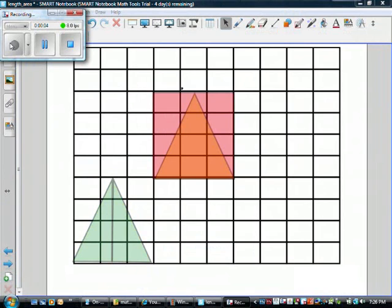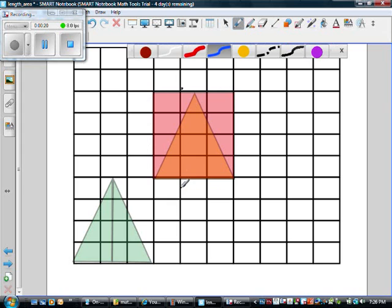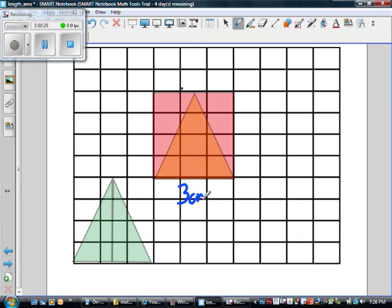Now, what happens if I have an isosceles triangle instead of my right-angled triangle? Well, I can use my rectangle again. This rectangle has a base of 3 centimeters and a height of 4 centimeters.